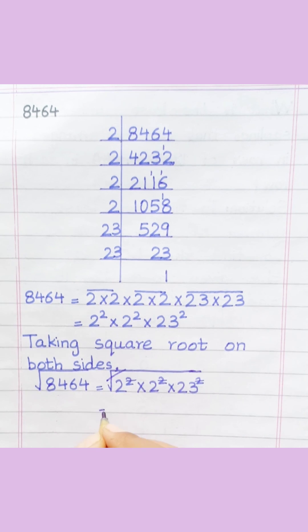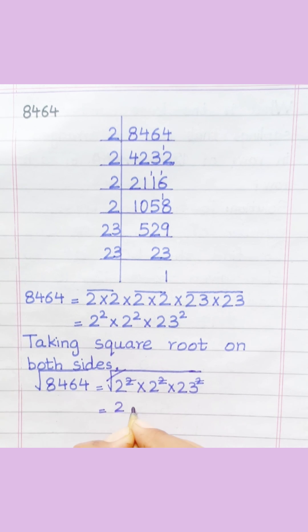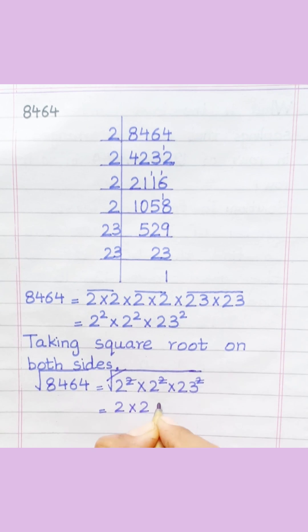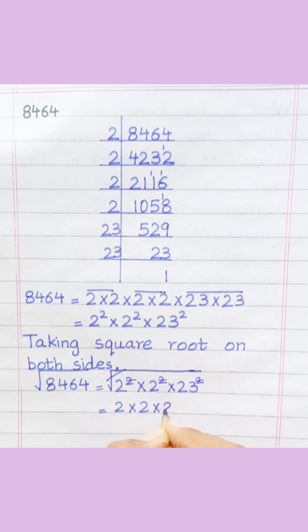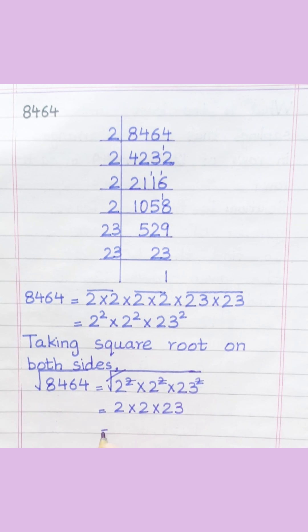Equal two multiply two multiply twenty-three. Equal ninety-two.